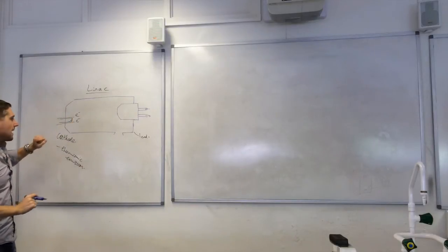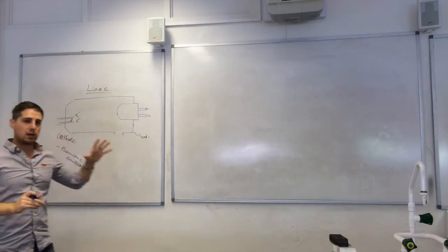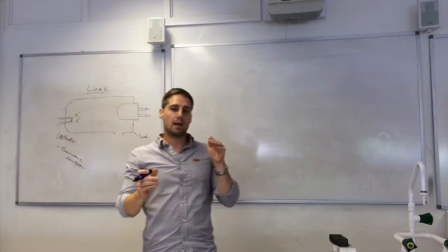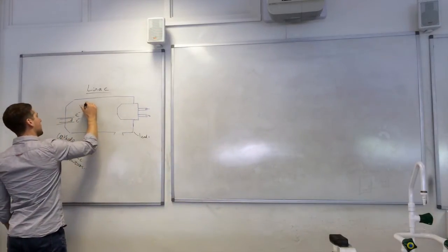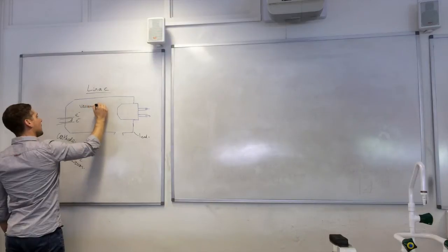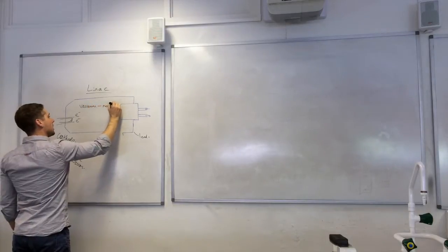Now here, we have a vacuum. And that vacuum is necessary so that electrons are not obstructed by air molecules. So we've got a vacuum here, we need no air there.